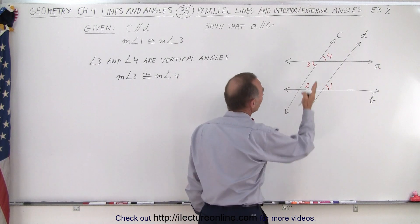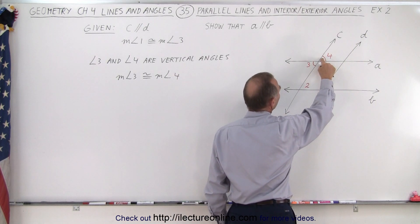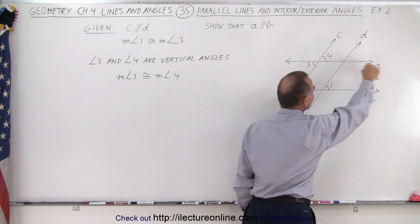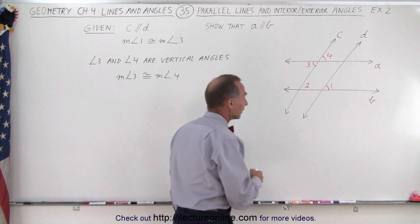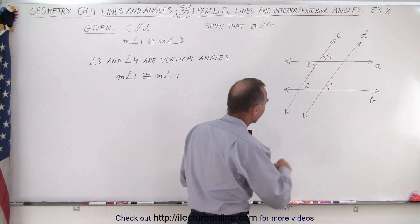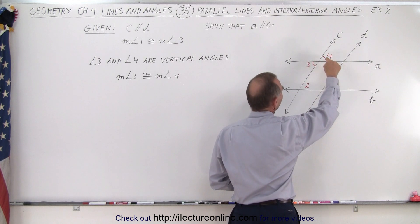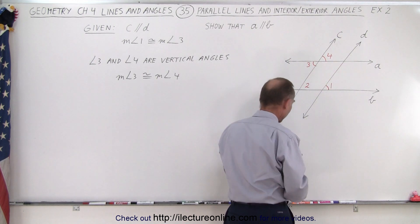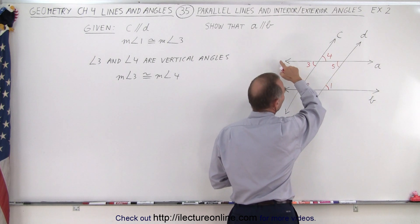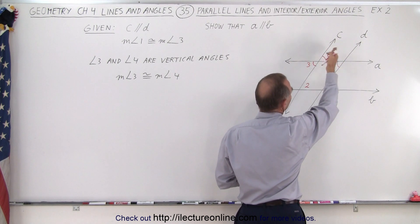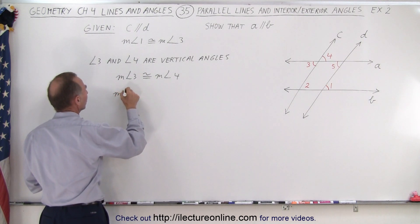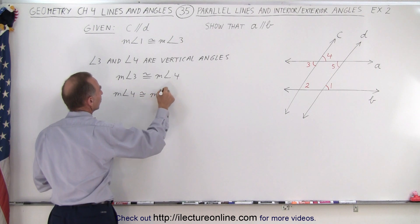Now we know that C and D are parallel. This angle and this angle are corresponding interior angles, assuming that line A is the transversal that cuts through lines C and D. Therefore, angle four, being an interior angle, must be congruent to this angle — let's call it angle five. Since we have a transversal crossing two parallel lines, angle four must be congruent to angle five. So the measure of angle four is congruent to the measure of angle five.